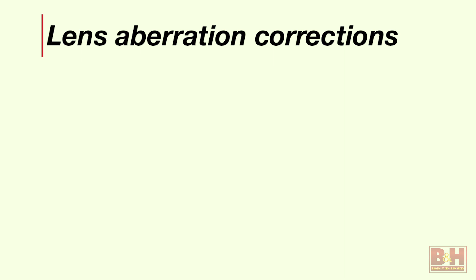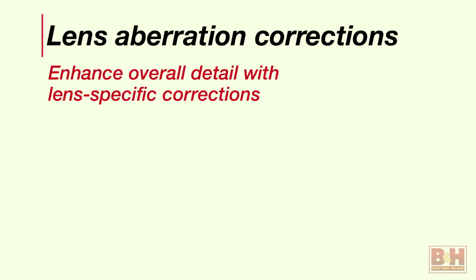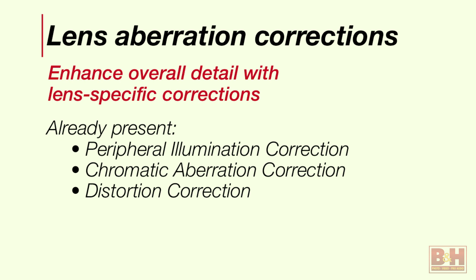One of the cool things in the 5D Mark IV is that we don't just have more pixels — we're able to do even more with them. One example is the enhancements to Canon lens aberration corrections, which we've had in EOS cameras for a while. We've had peripheral illumination correction — basically in-camera vignetting correction — and chromatic aberration correction. We've also had lens distortion correction for linear distortion, that fisheye effect on straight lines when shooting wide, or the pin-cushion effect at telephoto.